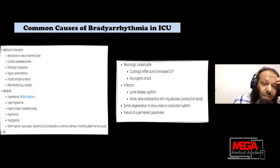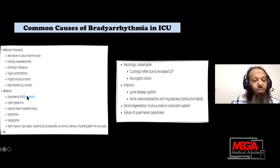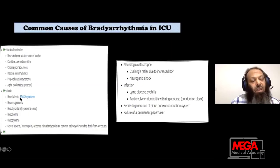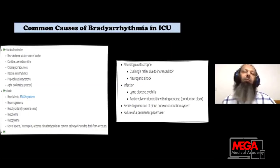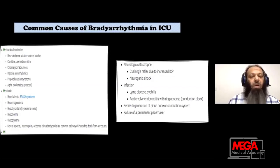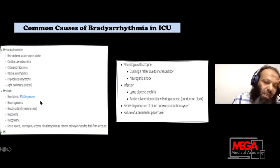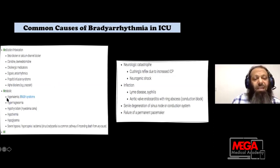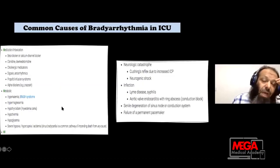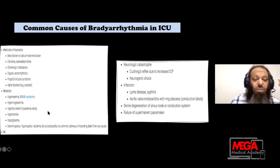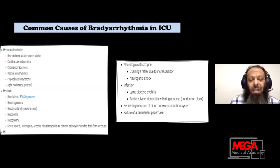The metabolic causes include BRASH syndrome, which is associated with hyperkalemia, renal failure, and AV block. Patients with renal failure and hyperkalemia go into what we call BRASH syndrome. Severe hyperkalemia, especially if acute, is a very common cause. Also hypermagnesemia, hypothyroidism, hypoglycemia if severe, and severe hypoxemia can all cause bradyarrhythmia.